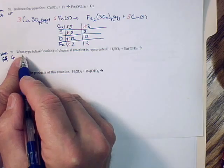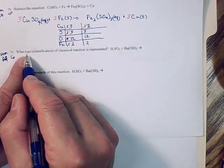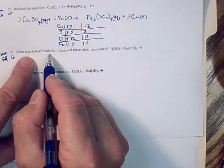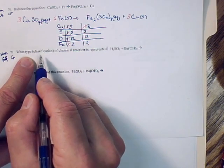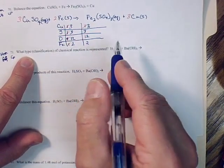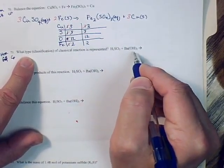The question is what type of chemical reaction is represented, and type is specified in the parenthesis as being the classification. So what classification of chemical reaction is represented? And I have two chemicals here.